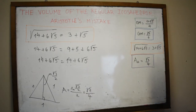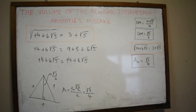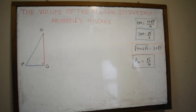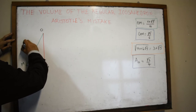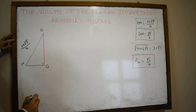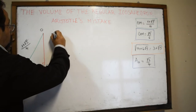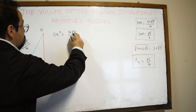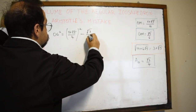Now let's do the final calculation. Applying the Pythagorean theorem in the triangle where we know two sides: OG² = [(1 + √5)/4]² − [√3/6]². This gives OG² = (1 + 2√5 + 5)/16 − 3/36, which simplifies to (6 + 2√5)/16 − 1/12.